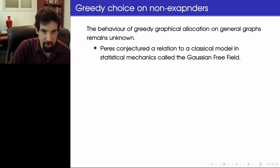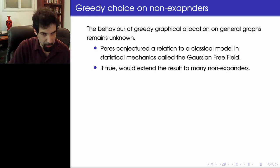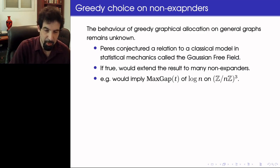And there is a conjecture by Peres that relates it to a classical model in statistical mechanics called the Gaussian free field. If it would be true, then it would extend the result to many non-expanders. For example, it would imply that the exponential concentration holds even if we are looking on a three-dimensional discrete torus.